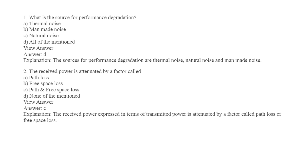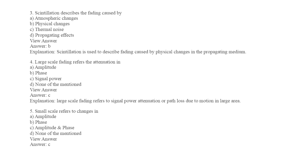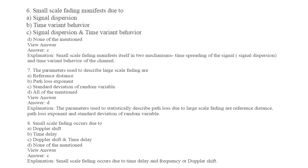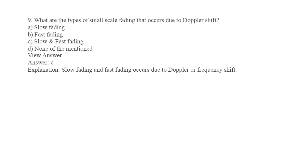What is the source of performance degradation? Options: thermal noise, man-made noise, all of the above. Received power is attenuated by a factor called path loss in free space. Scintillation describes the fading caused by physical changes in the propagation media. Large-scale fading refers to the attenuation of signal power. Small-scale fading manifests due to signal dispersion and time-variant behavior. The parameters used to describe large-scale fading include reference distance, path loss, and standard deviation. Small-scale fading occurs due to Doppler shift and time delay. What types of small-scale fading occur due to Doppler shift? Slow and fast fading.